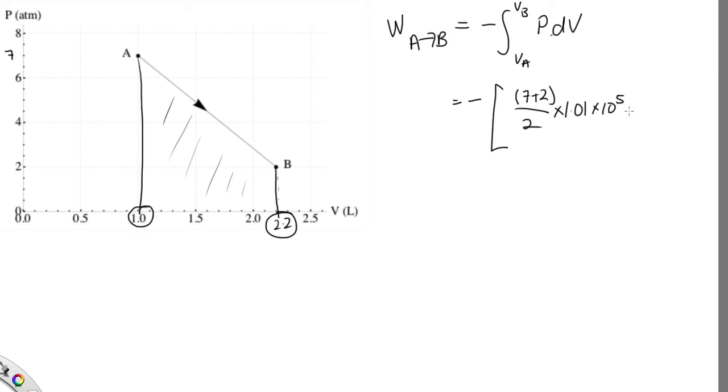Then we need to times that by the width of our trapezium, which is the 2.2 minus 1. Now this is in liters, but our SI units for volume are meters cubed, so we times that by 10 to the minus 3 to convert it into meters cubed.